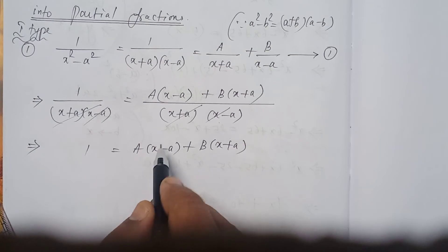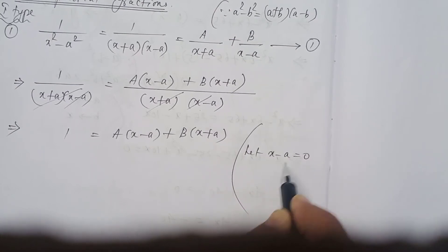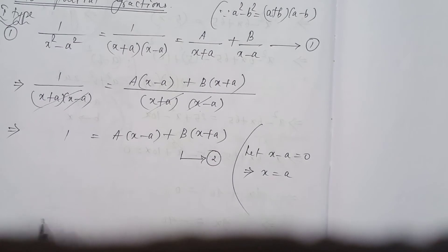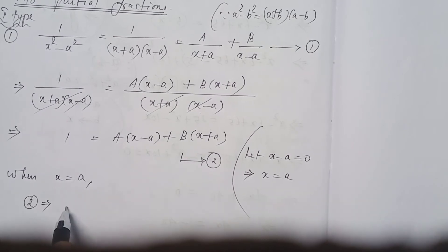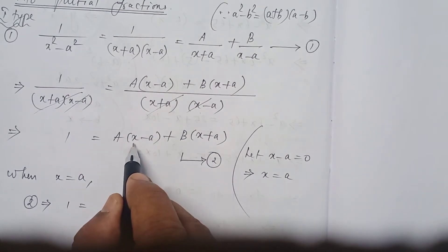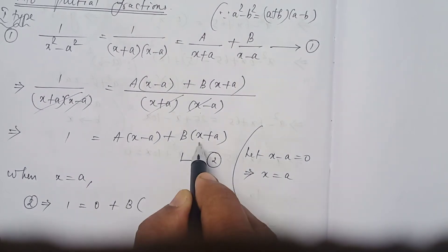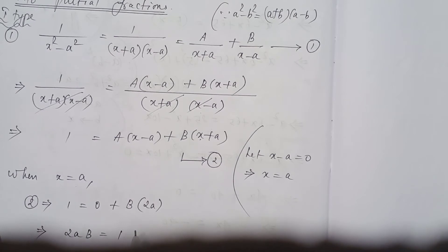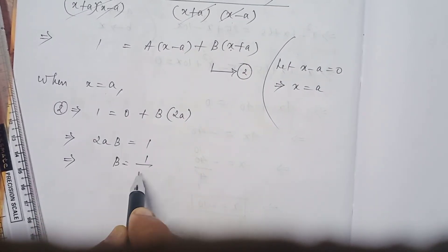After A we have the factor (x minus a). Consider x minus a equal to 0, which gives x equal to a. When x equals a, substitute in equation 2: 1 equals A(a minus a) plus B(a plus a), which gives 1 equals A times 0 plus B times 2a, so 1 equals 2aB. Therefore B equals 1 divided by 2a.